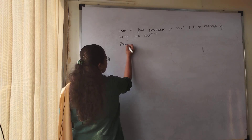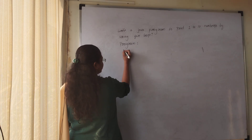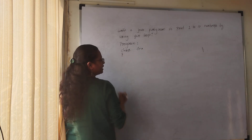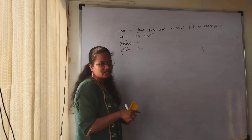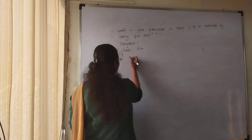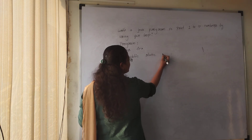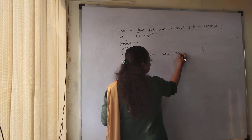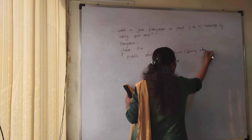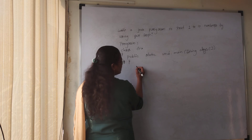First, you need to take a class — class name F Example. While saving the file, you have to save it as FExample.java. Then you need to write the main method: public static void main(String[] args). Next, we are going to write the for loop.